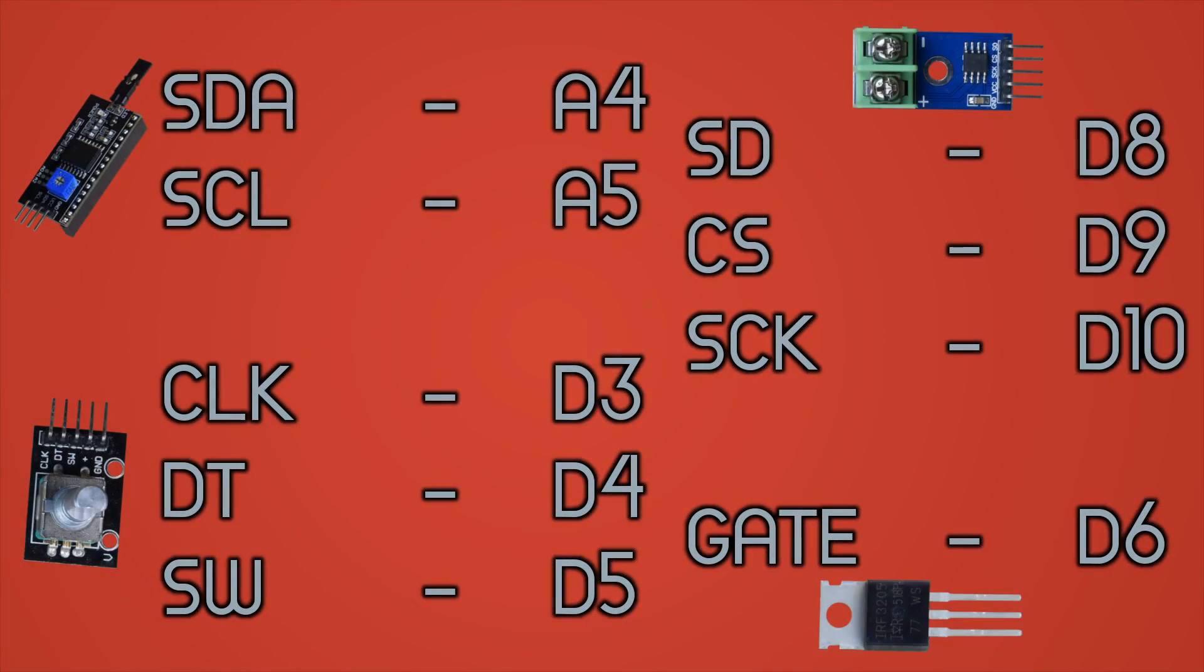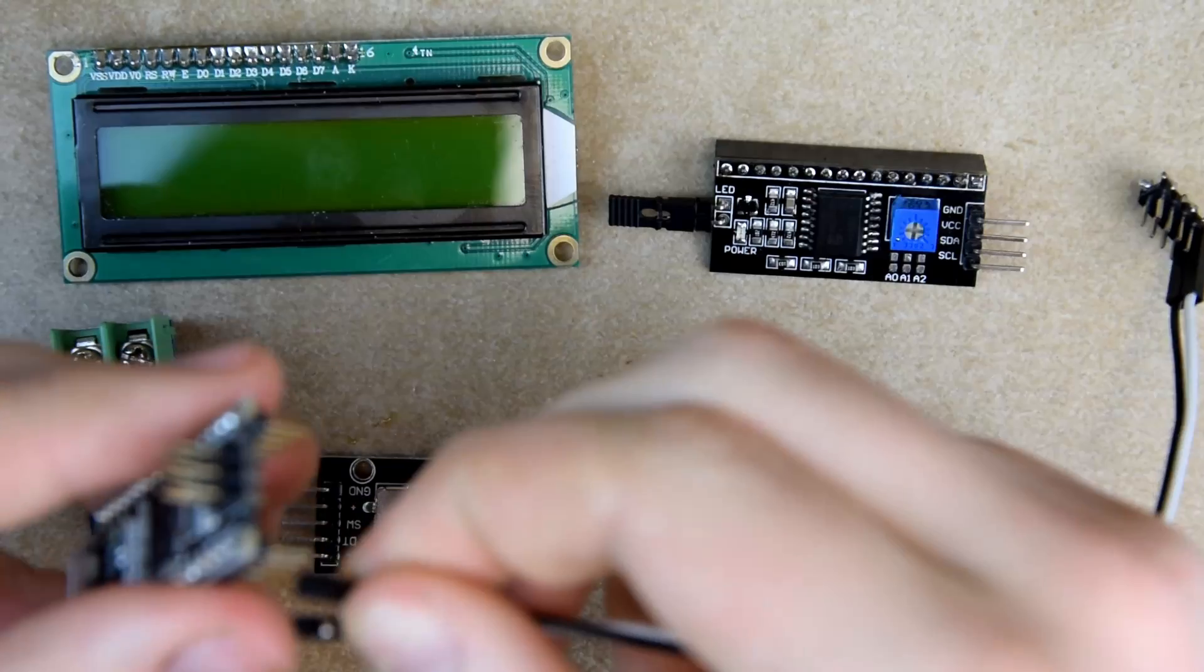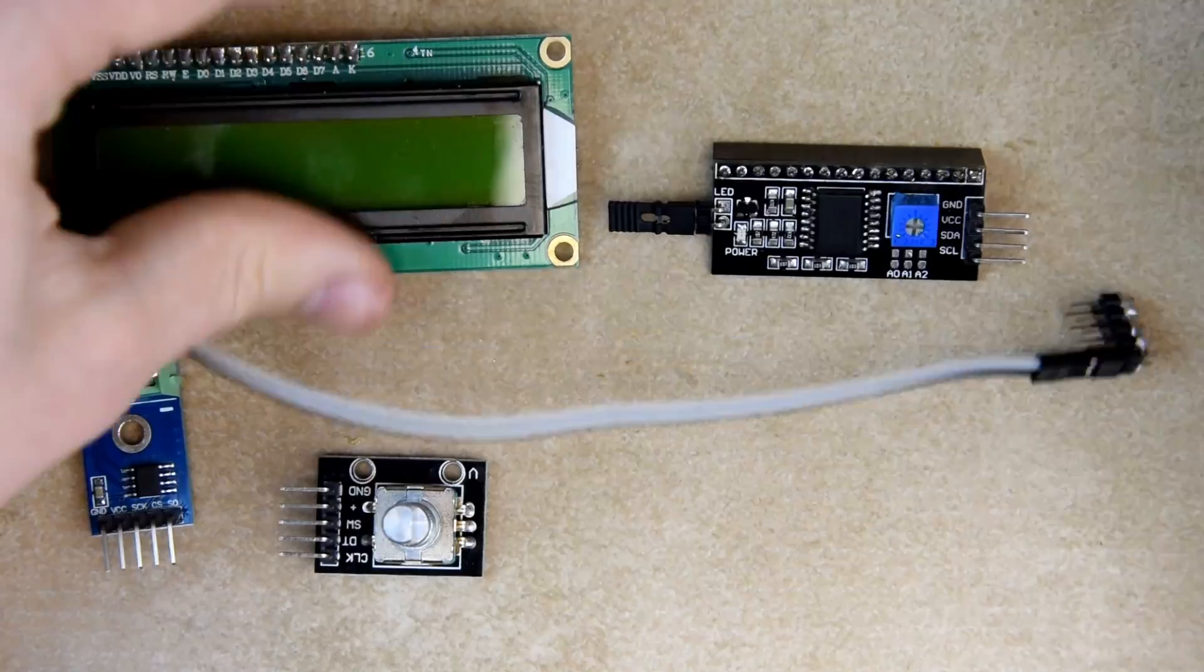Next, we'll assemble the remaining parts as shown. First, we connect the Arduino to the power rails.